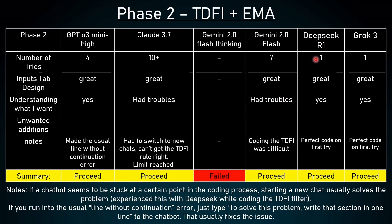What about DeepSeek? This was surprising — DeepSeek only needed one try and it instantly generated the correct code. The input step design was great, it understood what I wanted — overall a perfect code on first try. It proceeds. And the same is the case with Grok 3: only one try needed, input step design great, it understood what I wanted, perfect code on first try. A few notes: if a chatbot seems stuck at a certain point, starting a new chat usually solves the problem. And again, for the line without continuation error, just type 'to solve this problem, write the section in one line' — that usually fixes the issue.